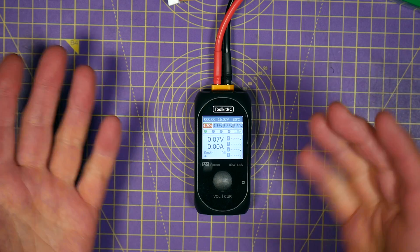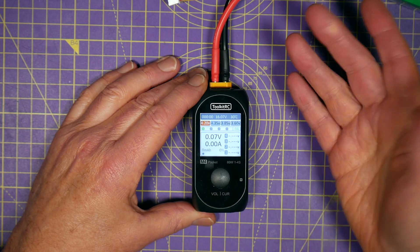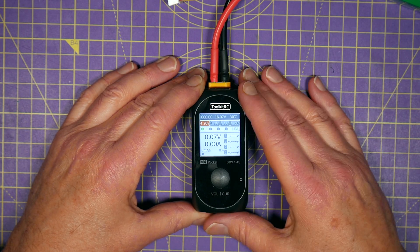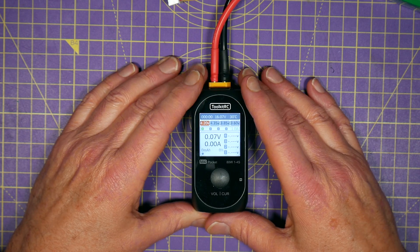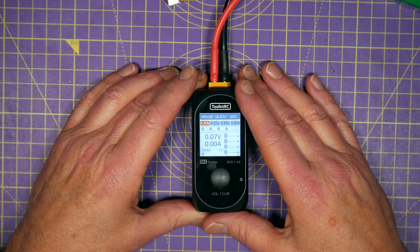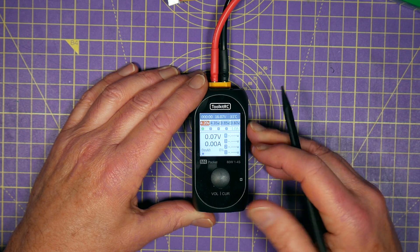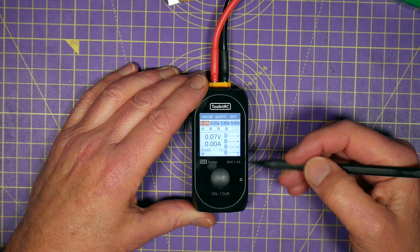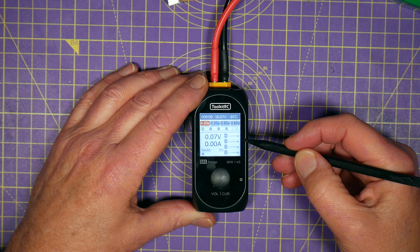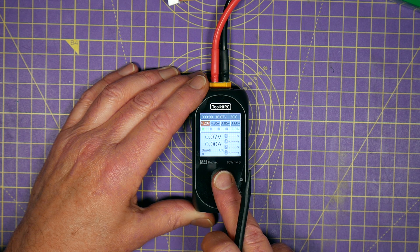This is a pocket sized balance charger that will fit perfectly into your flight bag or even your pocket. And it will charge 1 to 4S batteries with the usual LiPo and lithium ion chemistries at up to 5 amps. And it's got this very readable bright IPS display with the familiar Toolkit RC charger user interface.